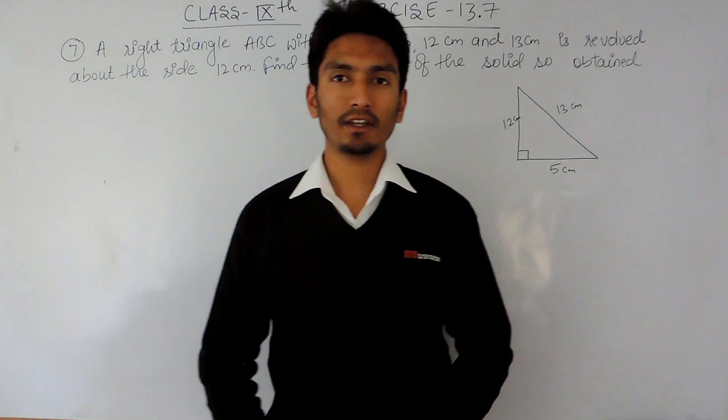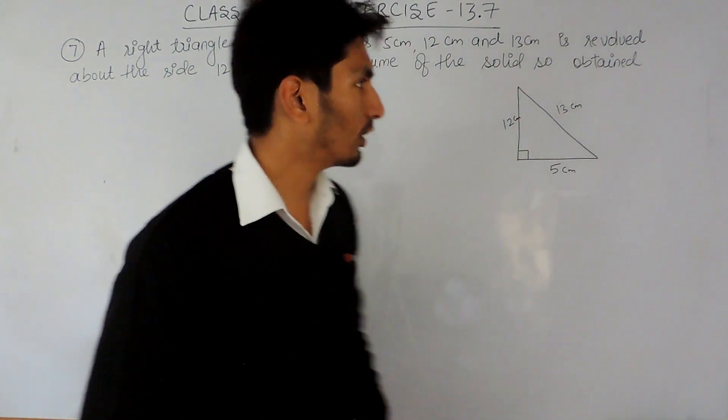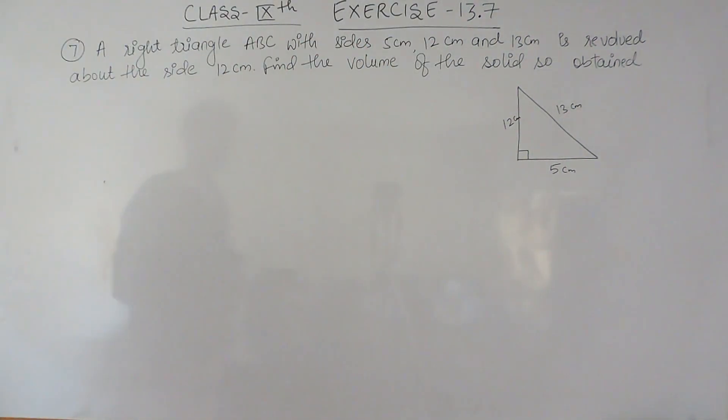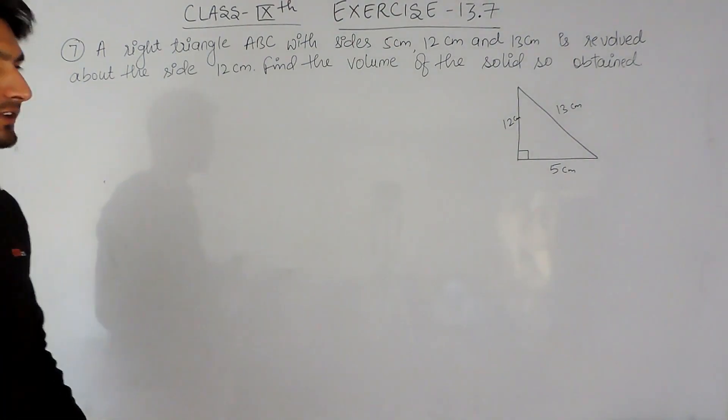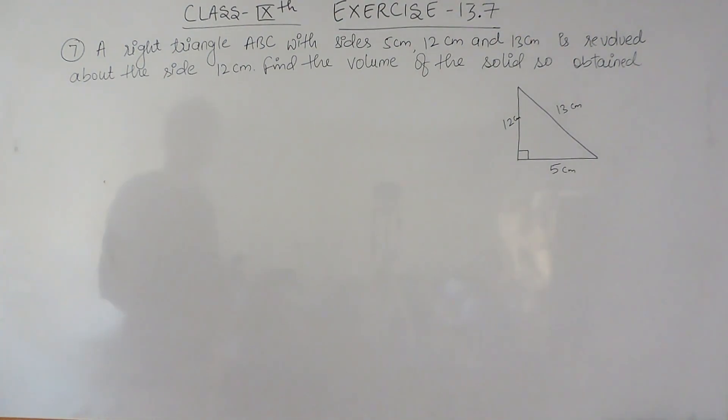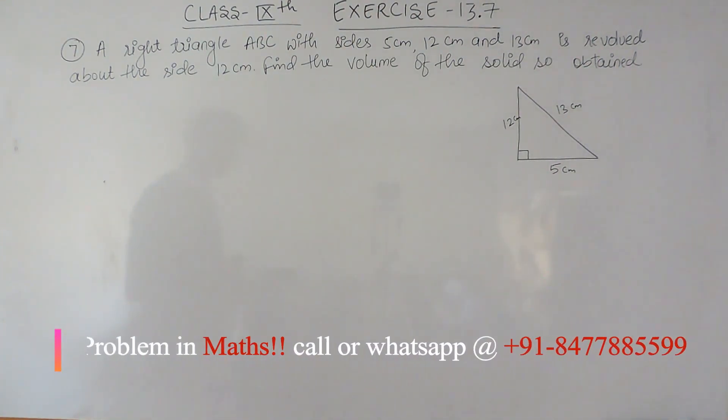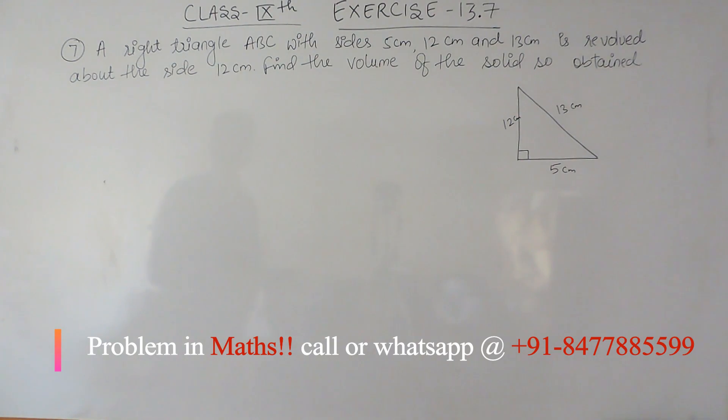Hello everyone, in this video we are going to solve question number 7 of exercise 13.7. The question says a right triangle ABC with sides 5 centimeter, 12 centimeter and 13 centimeter is revolved about the side 12 centimeter. Find the volume of the solid so obtained.